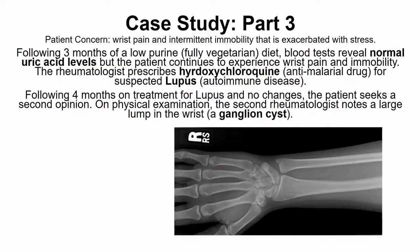Now that we have more options for our patient, let's see how they're doing with their diet. They report back that they've been good about sticking to the low-purine diet by eating fully vegetarian and avoiding other high-purine foods and drinks. Their blood tests show normal levels of uric acid, but the patient notes no change in the pain and immobility of the wrist. Based on the positive anti-nuclear antibodies from previous blood work, the rheumatologist suspects joint pain associated with lupus, which is an autoimmune disorder. The patient is prescribed hydroxychloroquine to suppress the immune system and help with the pain.